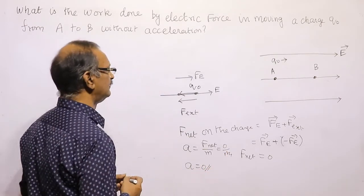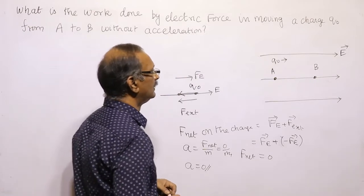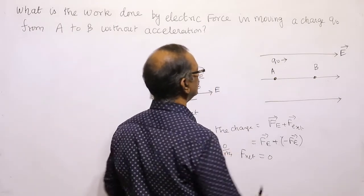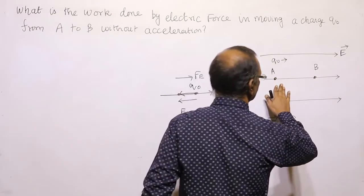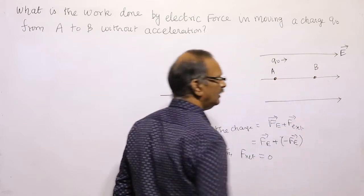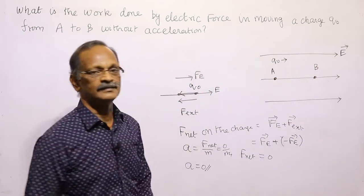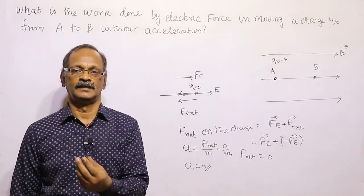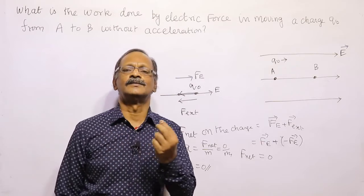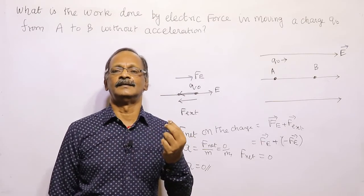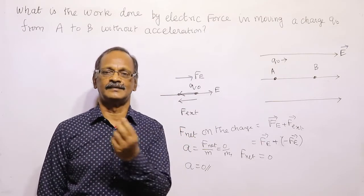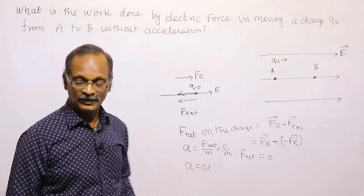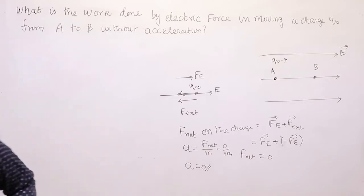In a conservative field, this always happens. It means the charge is moved from A to B without acceleration. How is this possible? They will move it very slowly — without any acceleration means the particle is moved without any acceleration.